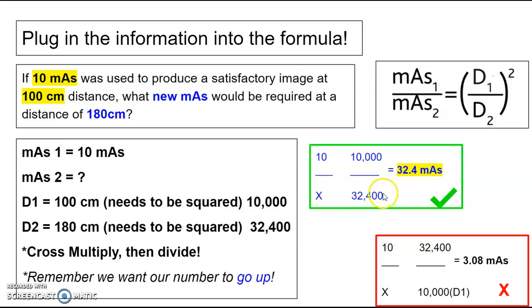So distance 2 squared goes at the bottom here. Then simply just cross-multiply and divide. 10 multiplied by distance 2 divided by distance 1, and I get an answer of 32.4 mAs. Does that make sense? Yes. I went from 10 mAs at 100 centimeters to 32 mAs at 180. Yes, I went up. That's what I wanted to do.